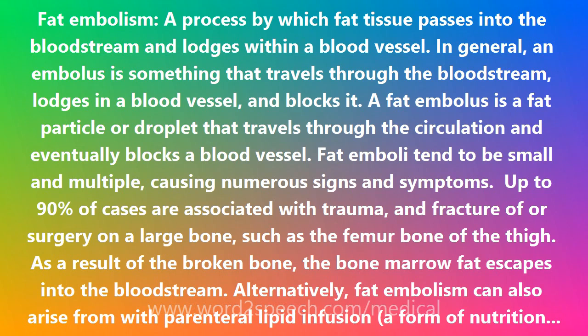Anemia and thrombocytopenia, meaning low platelet count, are common. Small hemorrhages are commonly seen on the neck, shoulders, armpits, and conjunctiva. The mortality rate is 10 to 20%. The elderly and those with underlying medical conditions or poor health have worse outcomes.